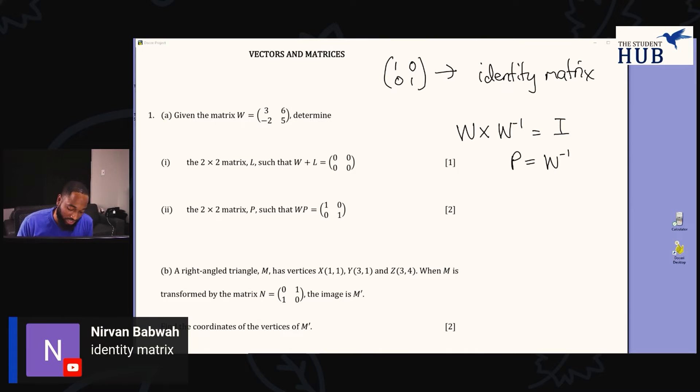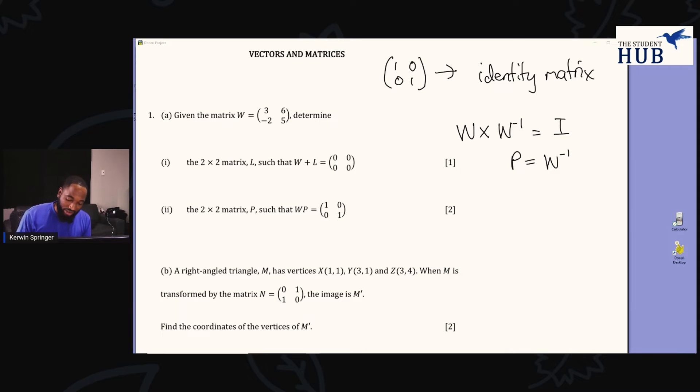What they are essentially asking you here is to find the inverse of this matrix. To find the inverse matrix for CXC, we use a process where we find the adjoint and the determinant. Matrix W was three, six, negative two, and five.